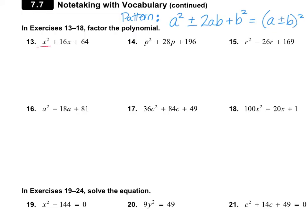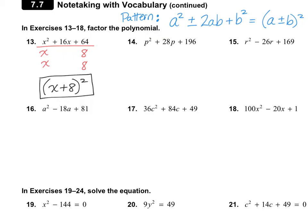Let's take a look at number 13. I notice I have a perfect square here and a perfect square here. x squared is x multiplied by x, and 64 is 8 times 8. They're both positive and add up to the middle term of 16x, so I do have this pattern. Since they're both exactly the same going across, it's x plus 8 times x plus 8, which simplifies to x plus 8, all quantity squared.